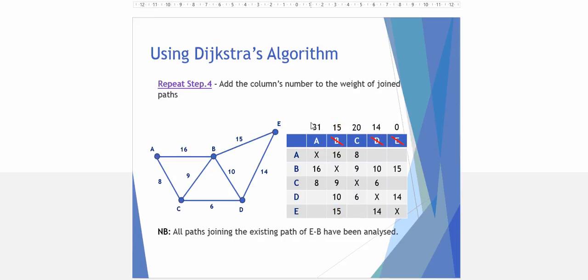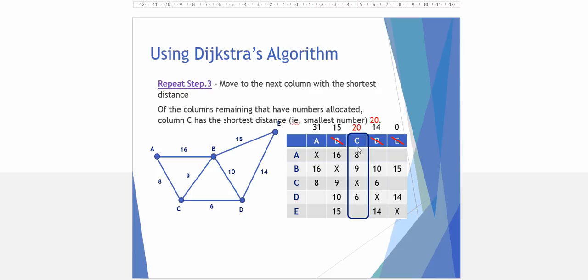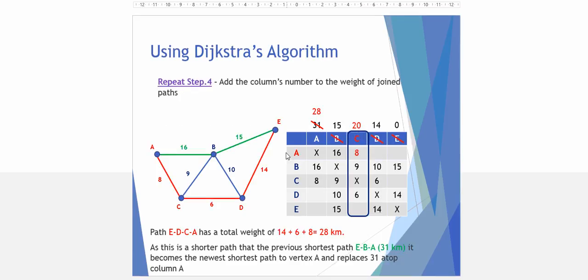Next we look at our shortest number of the columns available, and 20 in column C is our next shortest number. So C to A there is an 8. We have 20 at the moment plus another 8 gives us from E all the way to A a weighting of 28 km. Now that's a shorter path than the previous E to B to A that was 31. So we replace it with the 28 as our current shortest path from E all the way to A.